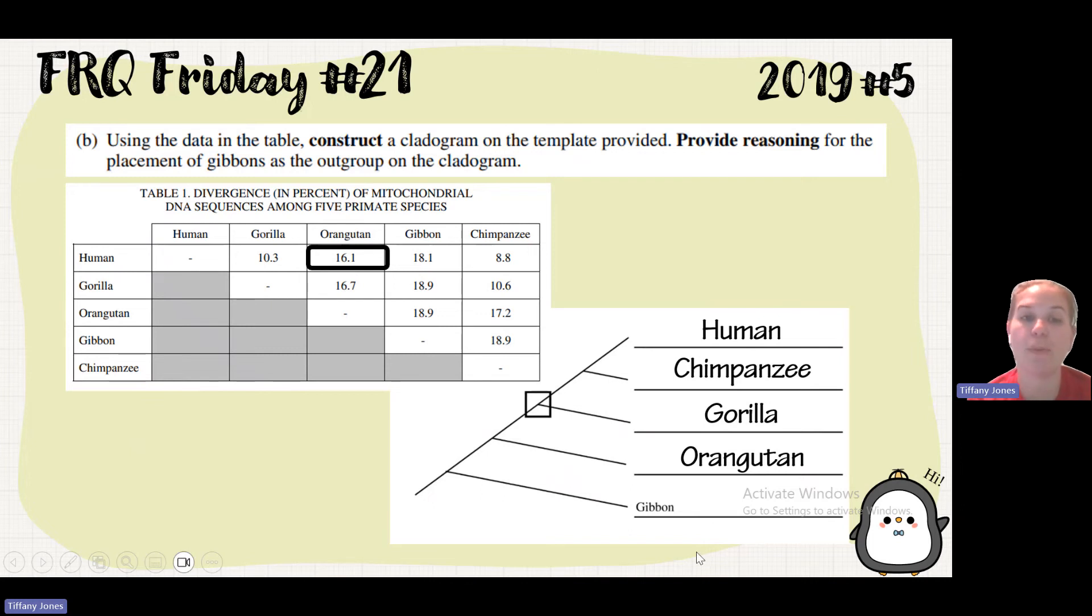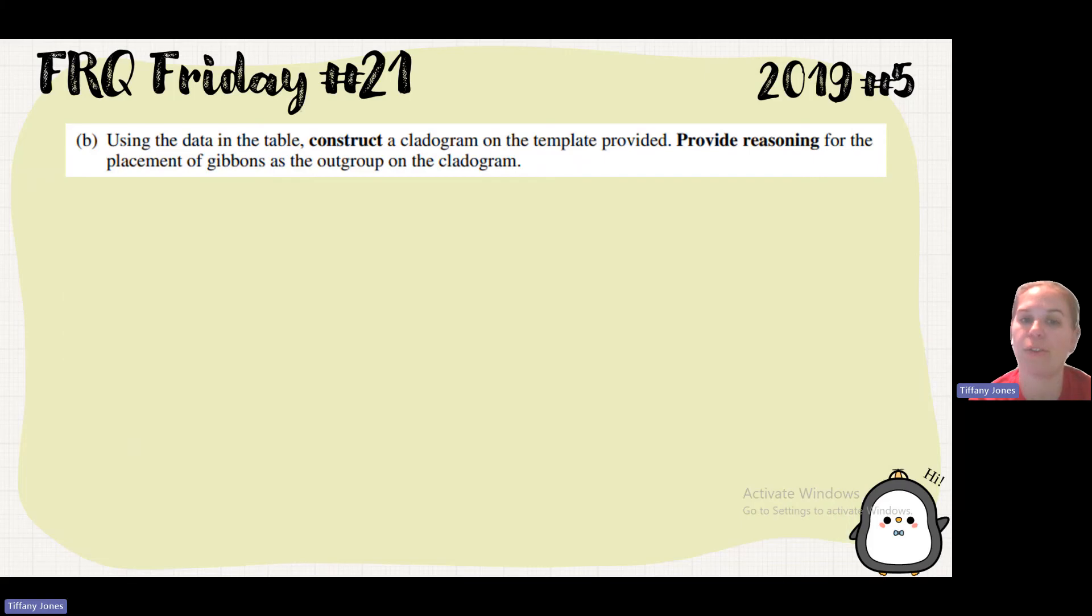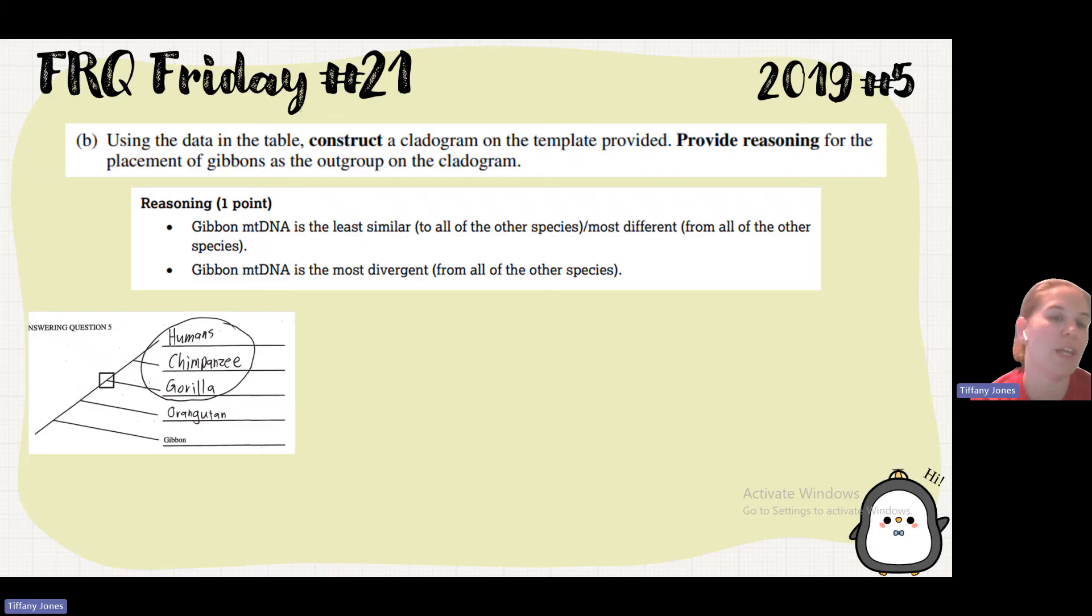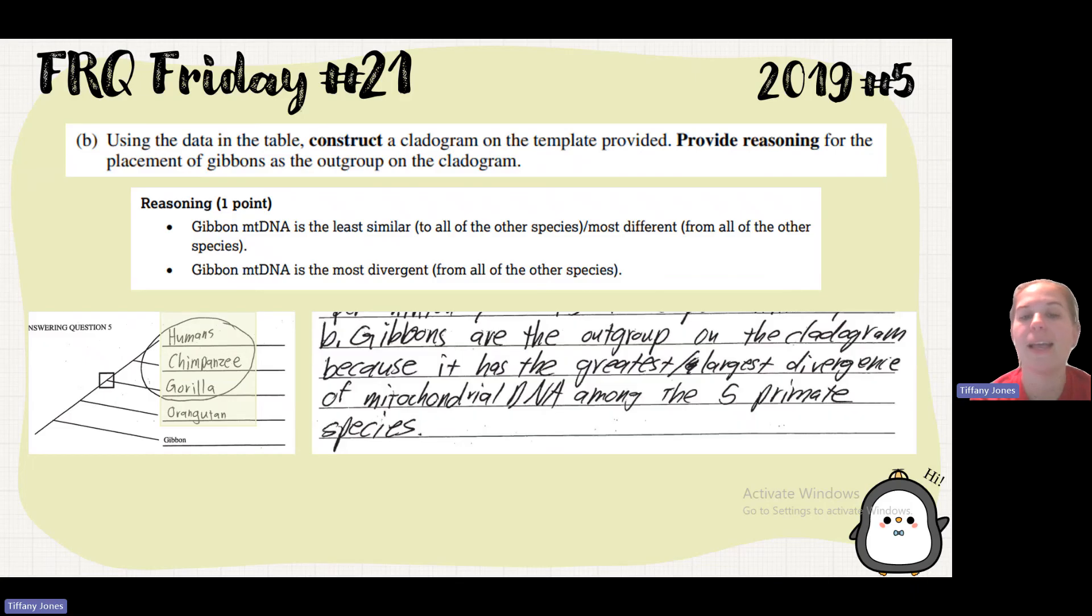So we have to provide reasoning for the placement of that gibbons as the outgroup. So in terms of this being an outgroup, it has the most divergence from the human. It's got the highest percent divergence. So it's the least similar from the others. So gibbon is the least similar, most different, or gibbon is the most divergent. So here's the student. They put the human, the chimpanzee, and the gorilla, and then the orangutan. They get points for that. And they said gibbons are the outgroup in the cladogram because they have the greatest, largest divergence of mitochondrial DNA among the five primate species.